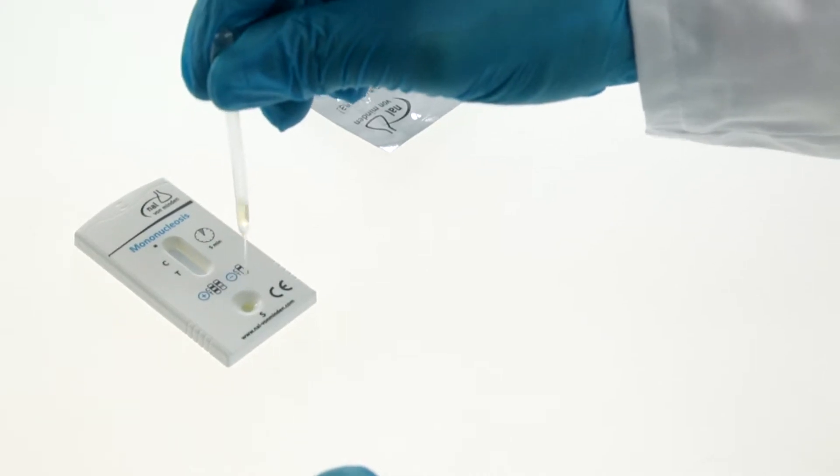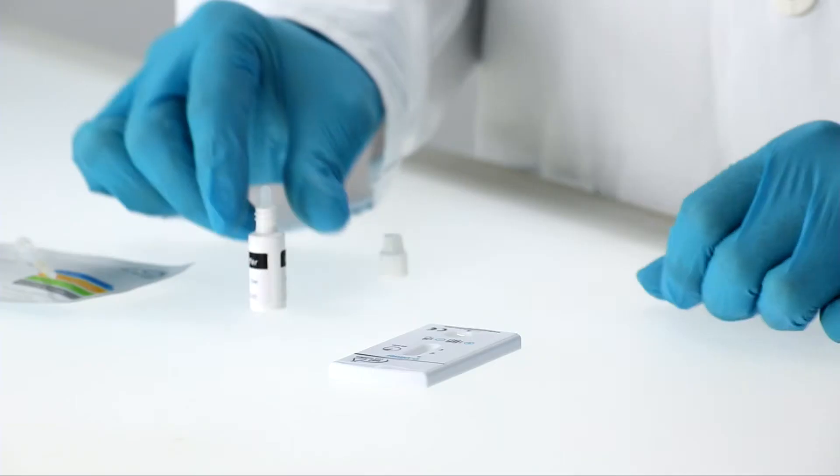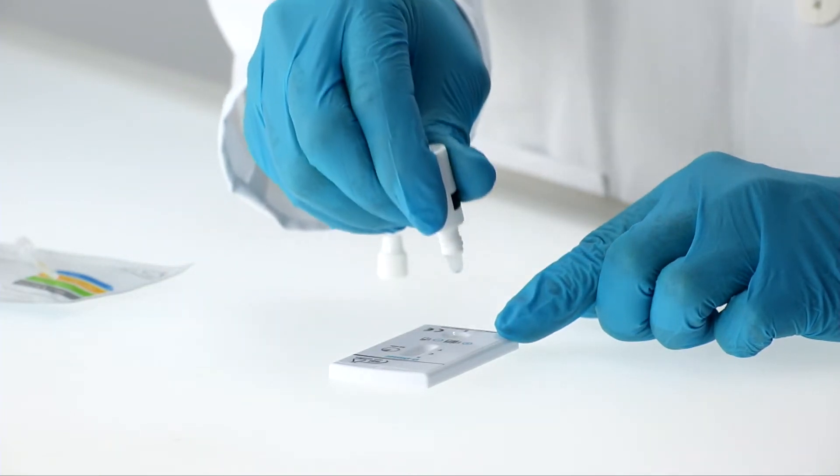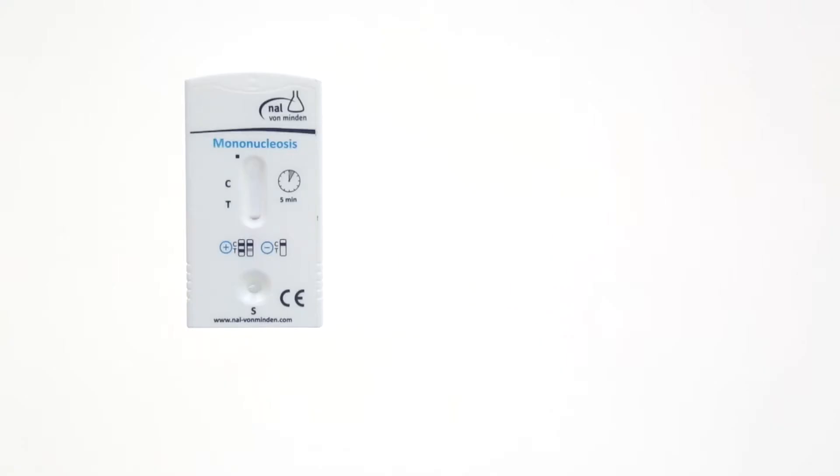Holding the pipette provided vertically, dispense one drop of serum to the sample well of the test cassette, then add one drop of buffer. Read the result after five minutes.